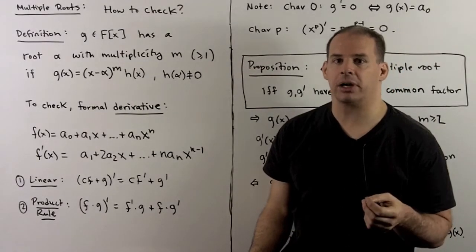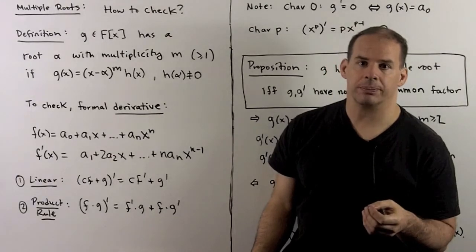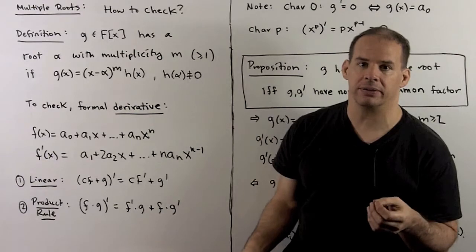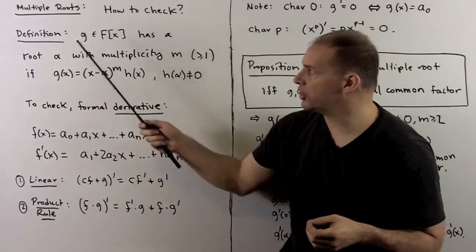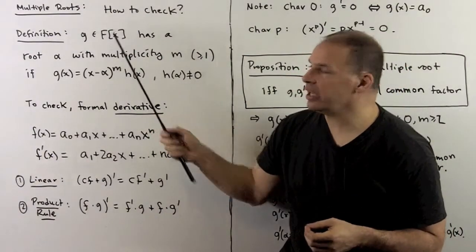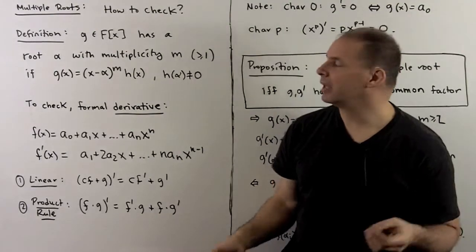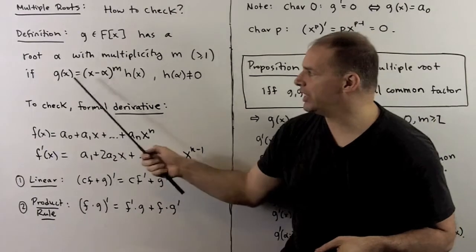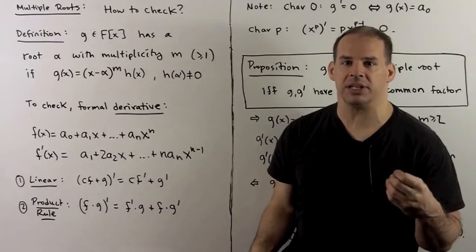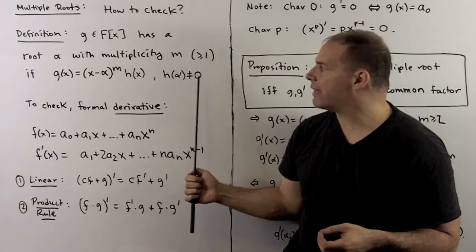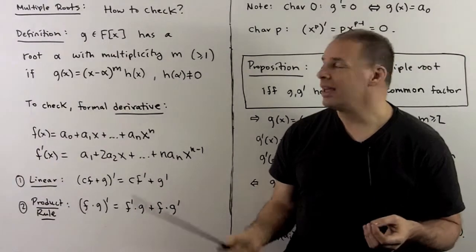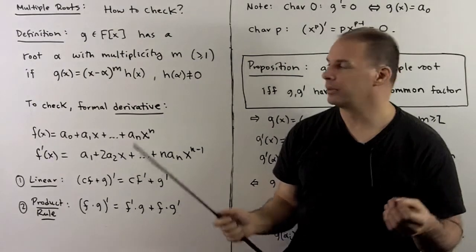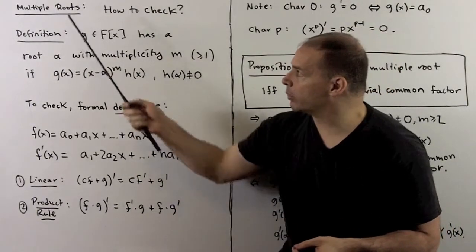The next question: when do polynomials have multiple roots? Here we'll assume all polynomials factor linearly over f. We say g, a polynomial with coefficients in f, has a root alpha with multiplicity m ≥ 1 if we write g as (x − α)^m · h(x), where h(α) ≠ 0 — meaning we can't pull another factor of (x − α) from h.